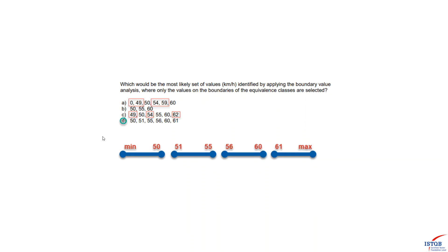Checking the answers, we are asked which set of km/h values would be identified by applying BVA where only values on the boundaries of the equivalence classes are selected. Answer A is not correct — it doesn't include all necessary boundary values like 51 or 55, and includes extra values 0, 49, and 59. Answer B is not correct — 51, 55, and 61 are missing. Answer C is not correct — it includes additional non-boundary values 49, 62, and 54. Answer D is correct — it includes all necessary boundary values.